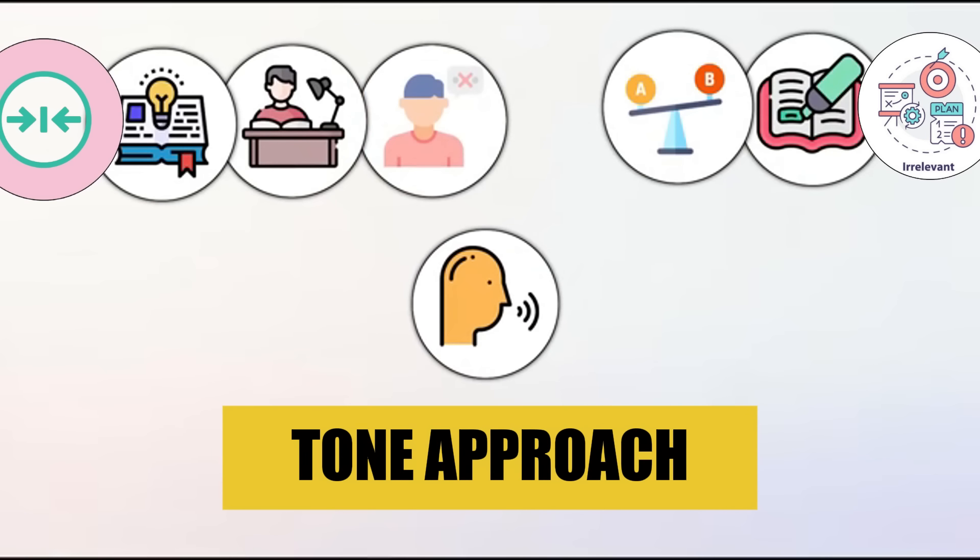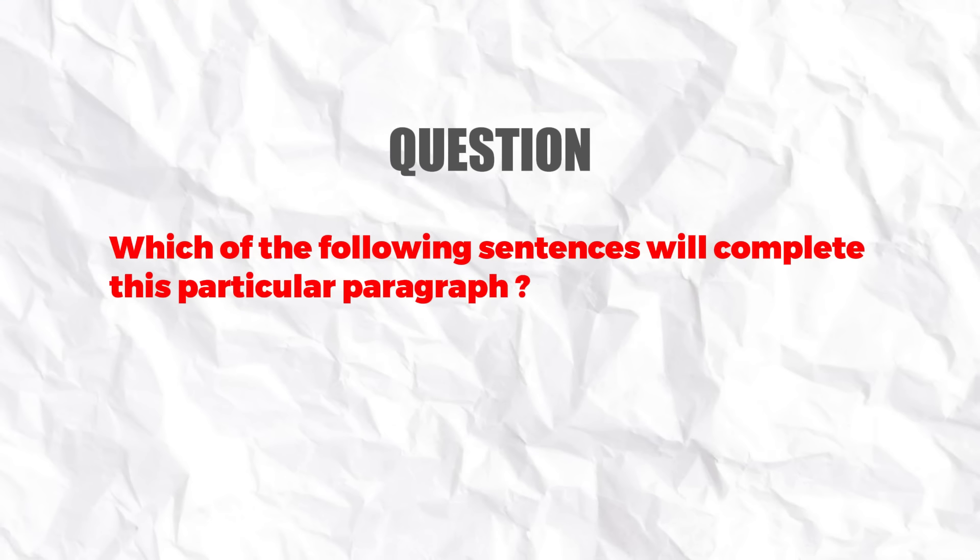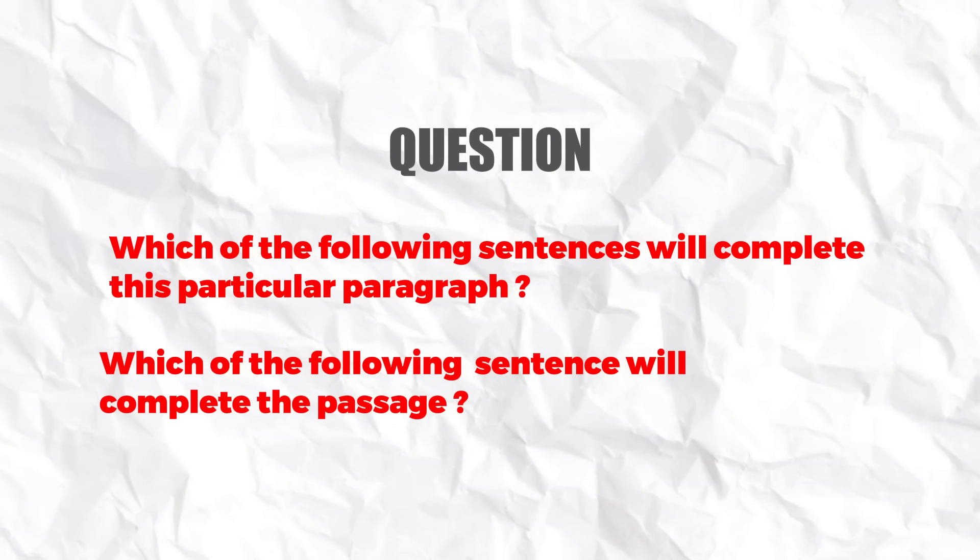The next strategy is to use the tone approach. Here you need to match the tone of the options with the tone of the rest of the paragraph or passage. These are very specific questions like: which of the following sentences will complete this particular paragraph? You need to be careful that the tone in which the option is written matches the tone of the rest of the paragraph. These are difficult questions because two options can be very close, making it hard to select the right answer.